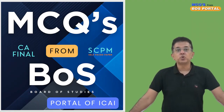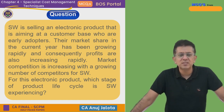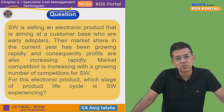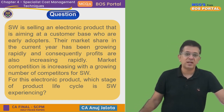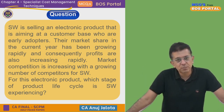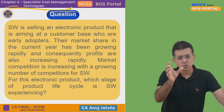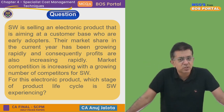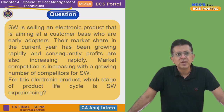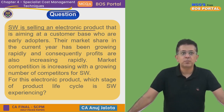Let's start today's question. It's Chapter Number Four, and one of the topics in Chapter Four is Life Cycle Costing. In Life Cycle Costing, every product passes through various stages — once a product is developed, it goes through an introduction stage, growth stage, maturity stage, and a declining stage. This question is all about that. SW is selling an electronic product aimed at a customer base who are early adopters.